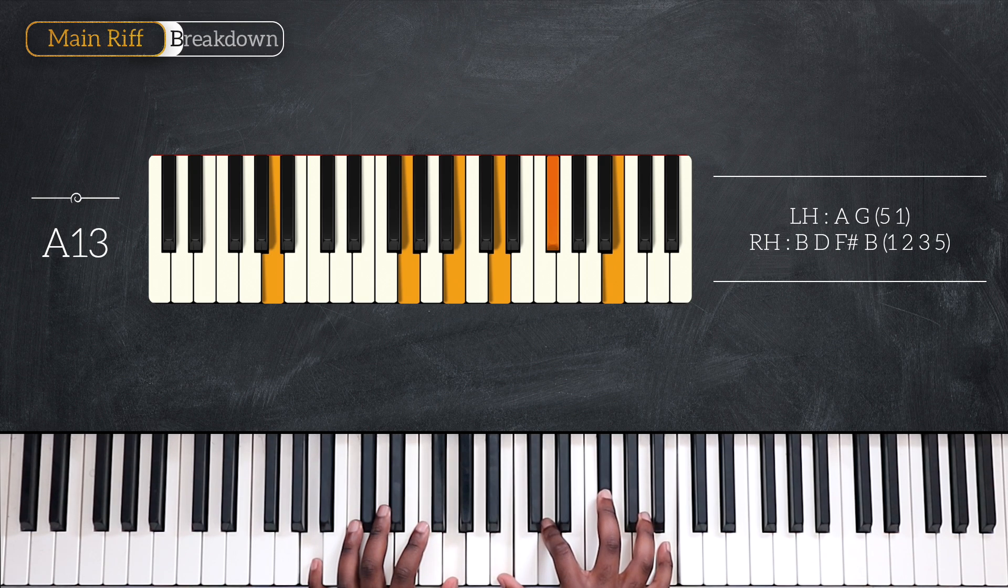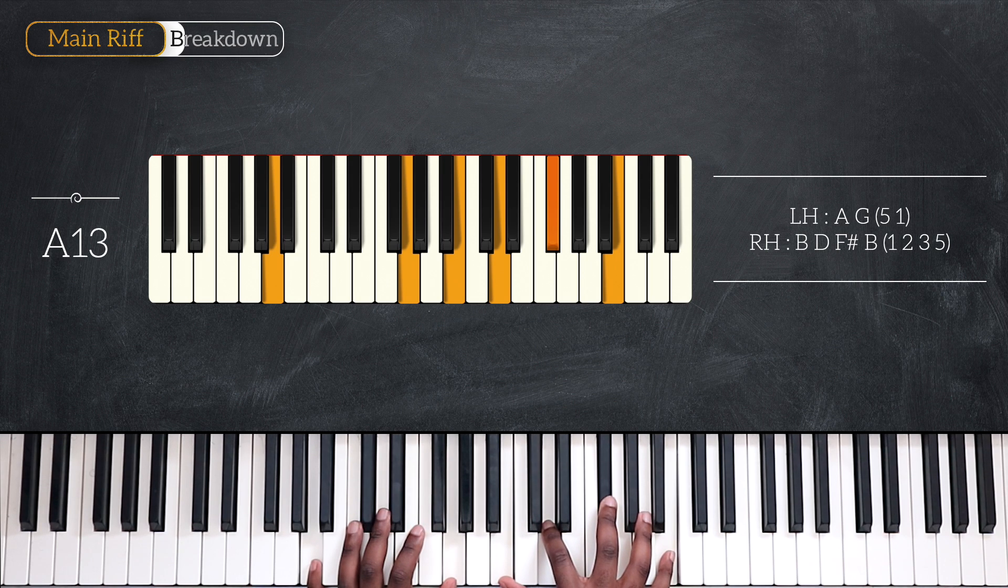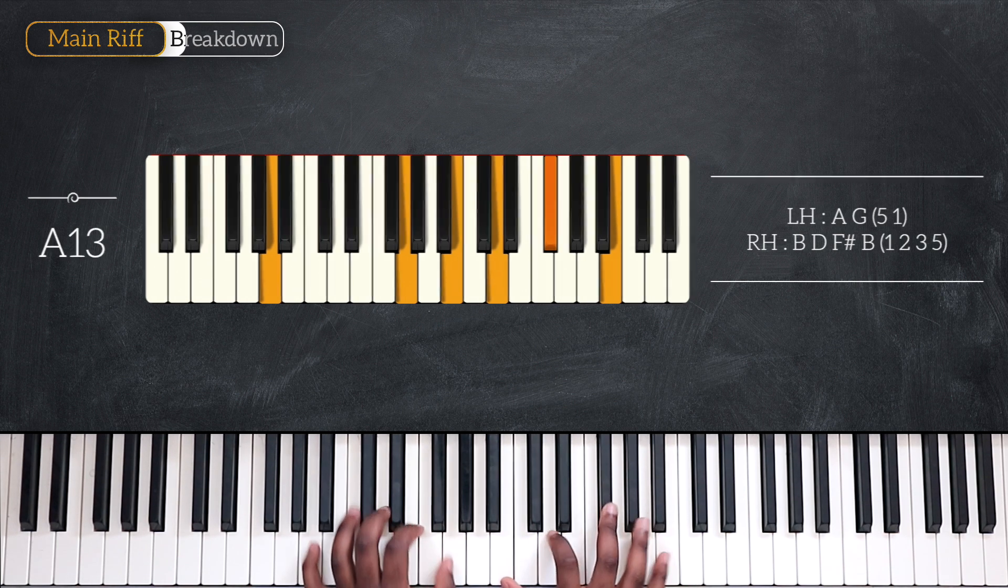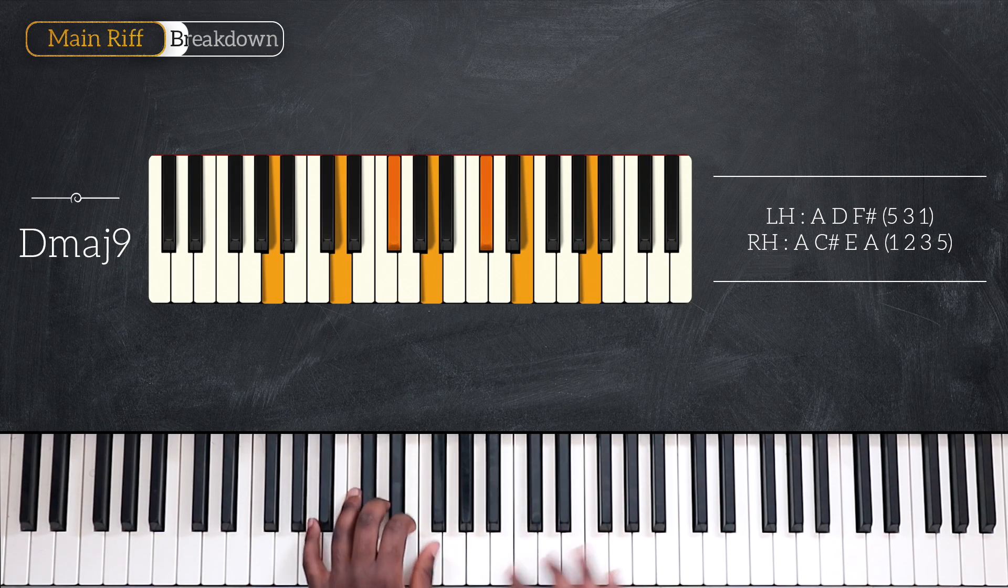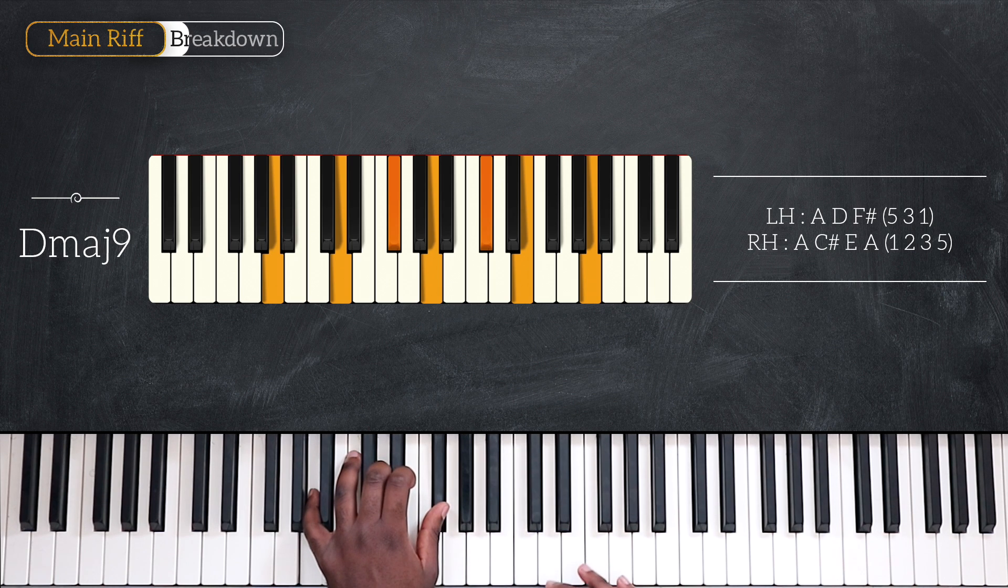A and G on the left, and for your right hand you're playing B, D, F sharp, and B. And then we have D major 9, playing A, D, F sharp on the left, A, C sharp, E, and A.